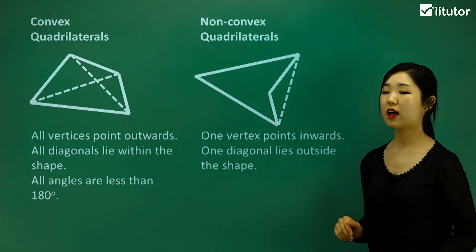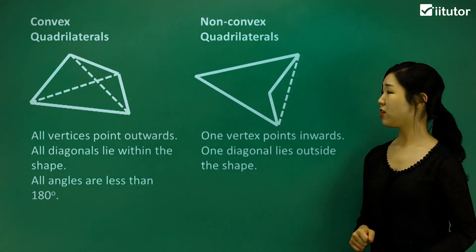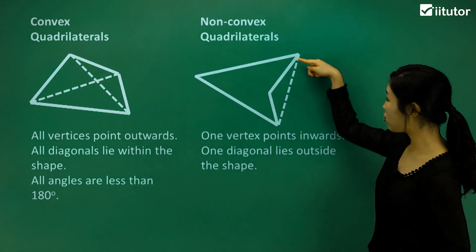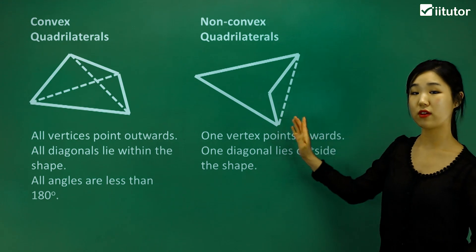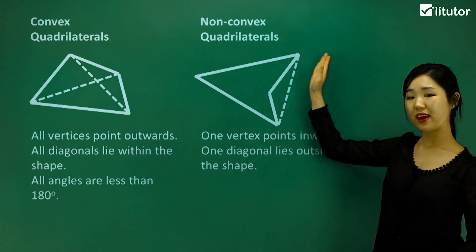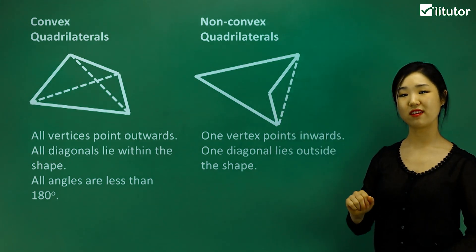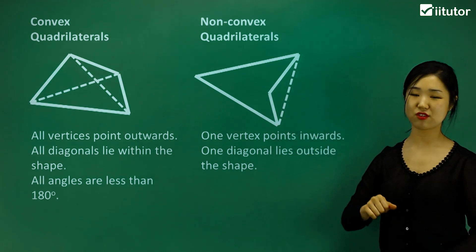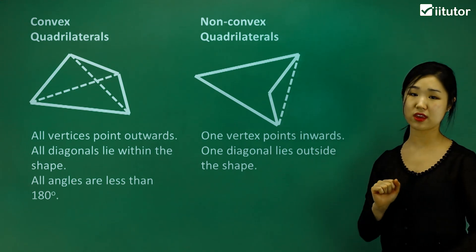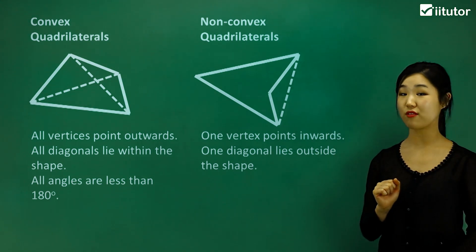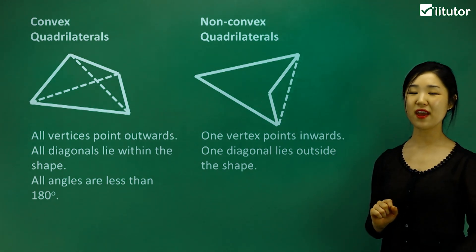Another property is that one diagonal lies outside the shape. You can see that if I join this diagonal with this diagonal and connect them up, it's outside the shape — it doesn't go inside the shape. So that's another key aspect of a non-convex quadrilateral.